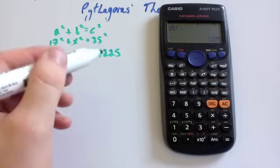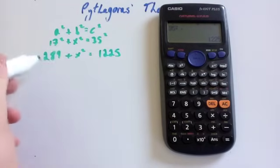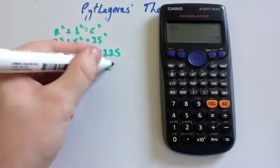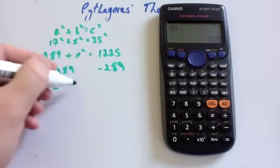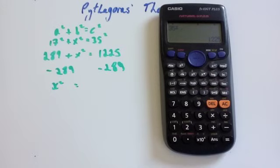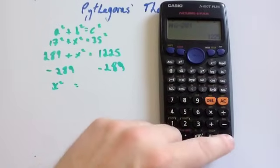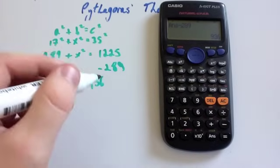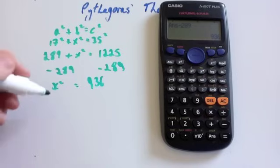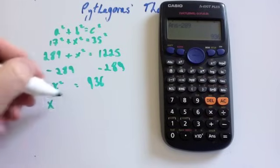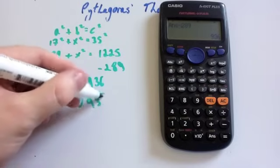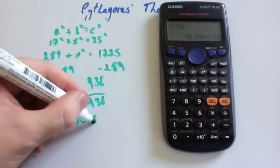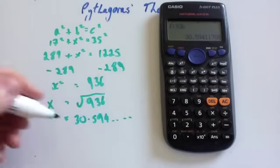We want x on one side and numbers on the other, so take away 289 from both sides. That leaves x squared equals 1,225 take away 289, which gives us 936. So x squared equals 936. We want to get rid of the squared, so square root both sides. The square root of 936 gives us 30.594..., and rounding to one decimal place, that would be 30.6 centimetres.